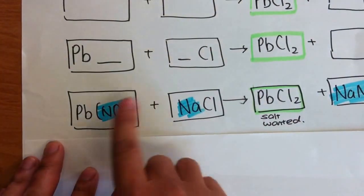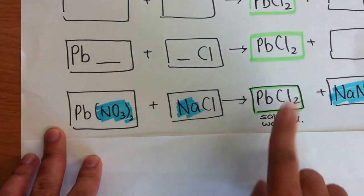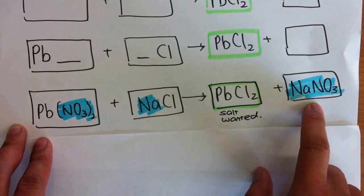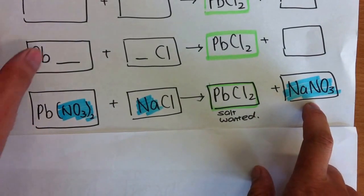So, I will use a nitrate. And same thing, I will use a group 1 salt. I will get the salt that I want, PbCl2. What remains will be Na, NO3.